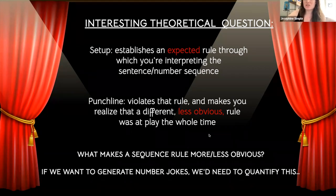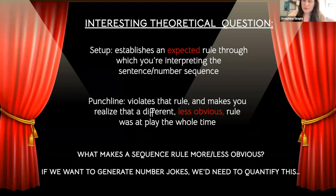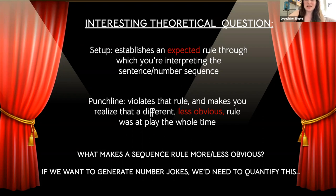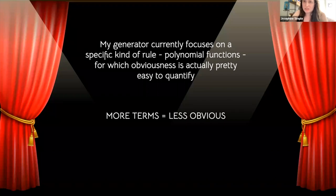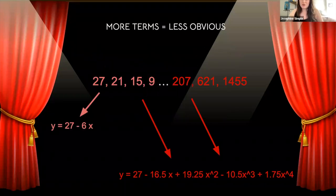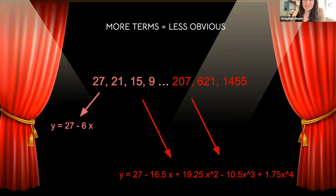If we want to generate number jokes, we'd want to quantify obviousness in some way, so we can place the less obvious sequence as the punchline. I've done some theoretical work on that question but it gets really complicated, so I ended up avoiding it in my generator by focusing on a specific kind of rule: polynomial functions. With polynomials, it's pretty easy to quantify obviousness — more polynomial terms equals less obvious. So in this joke, the setup is linear and the punchline is quadratic, which works great.